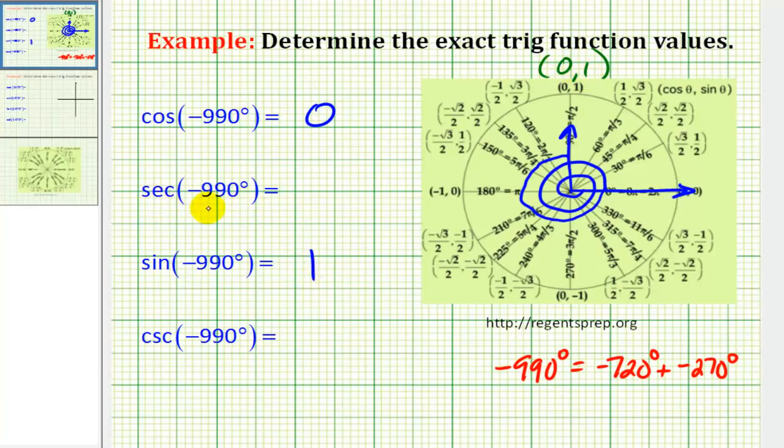Next, we know that secant theta is the reciprocal of cosine theta. So if we can determine the reciprocal of zero, we'll know the secant function value. The easiest way to do this is to make zero into a fraction. Well, zero over one would be a fraction. If we take the reciprocal of zero over one, or zero divided by one, it would be one divided by zero. Well, one divided by zero is undefined, and therefore secant theta does not exist.